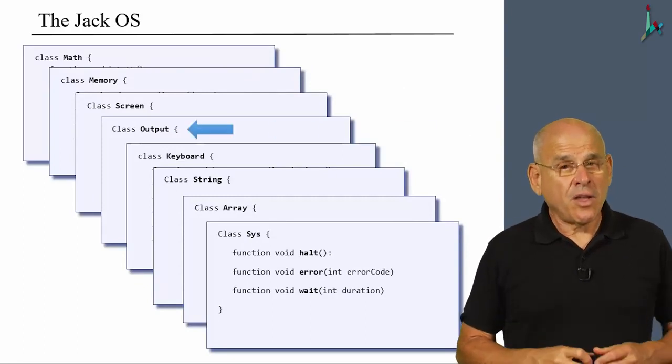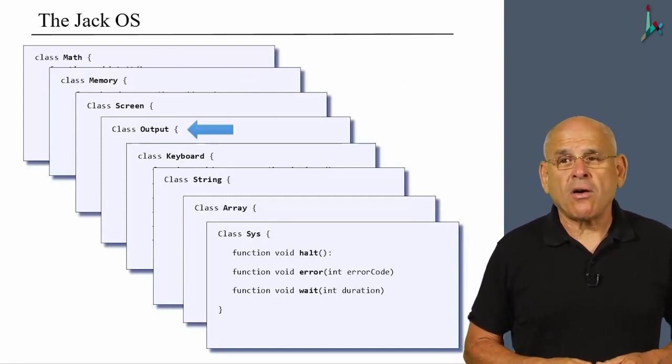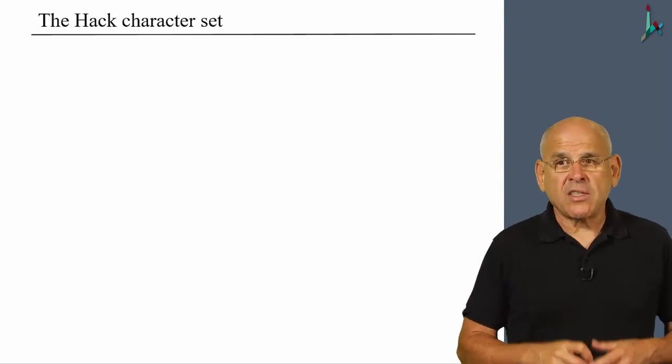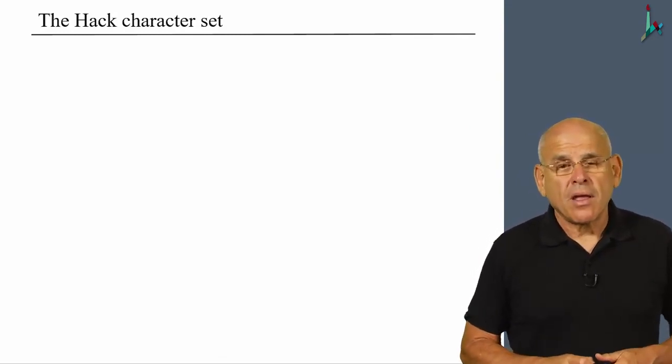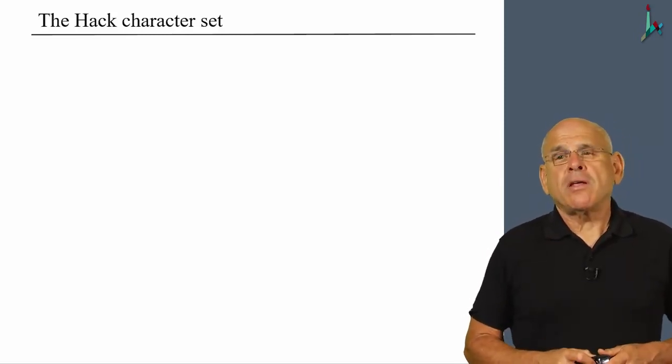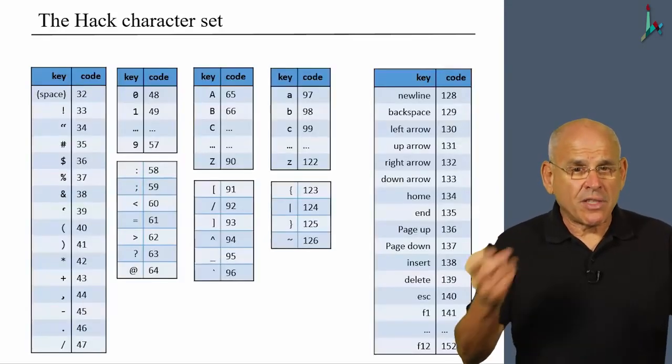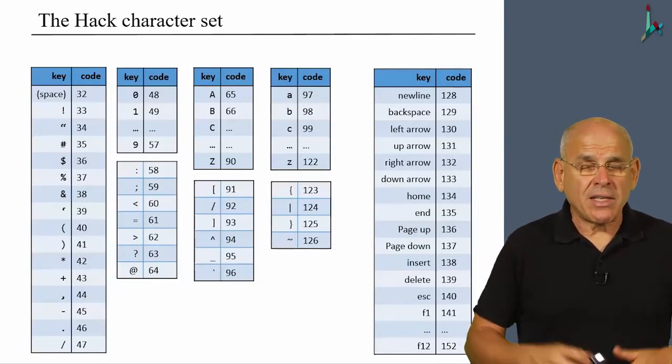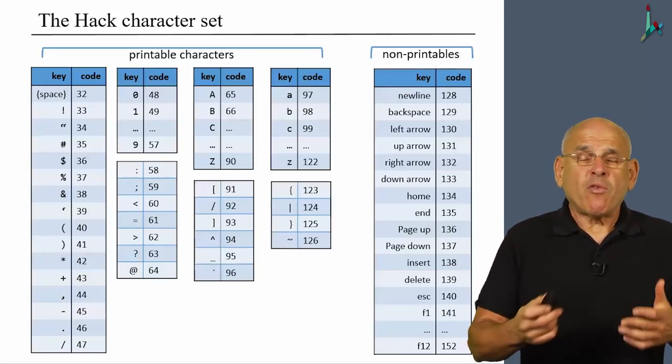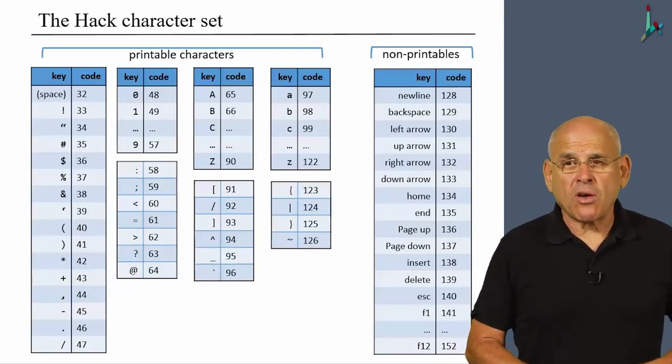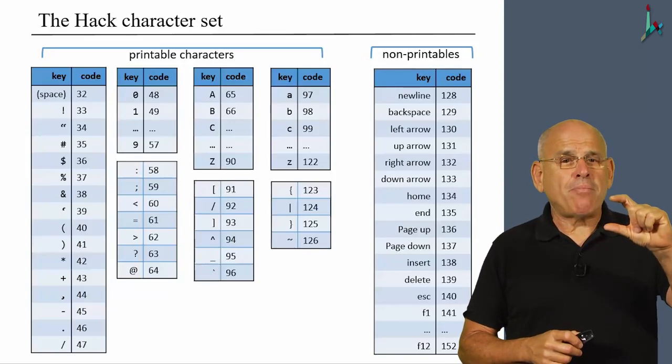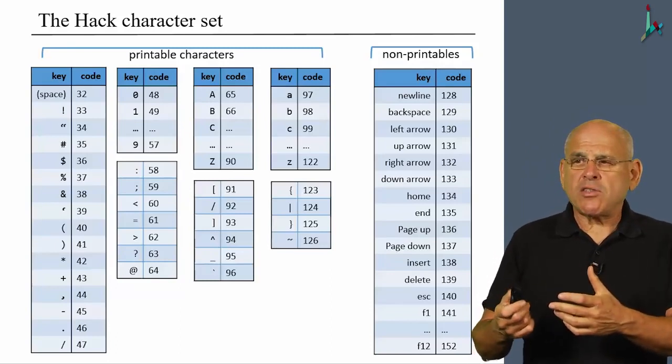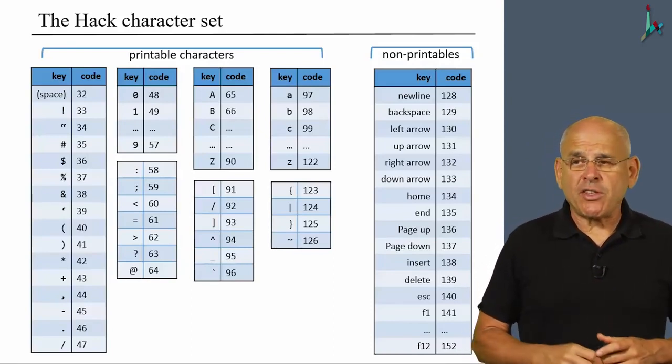All right, so we are dealing with the operating system and we are focusing on the output class. The first thing that we have to determine is what kind of characters are we expected to draw? Well, our Hack-Jack platform is characterized by many different specifications. One of them is this character set. So the computer supports and recognizes all these characters. Some of which are printable and others are non-printable. All the printable characters must have some bitmap image that displays them on the screen.